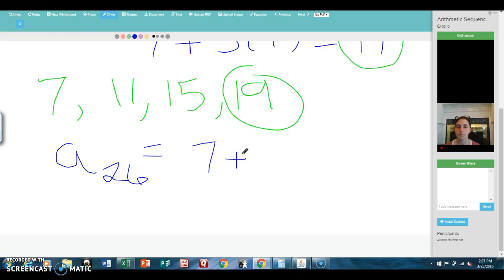So instead we can use our formula: the first term plus N minus 1, so 26 minus 1, and then the common difference, which was 4. So my 26th term is, let's see, 107. So you can imagine that would take a long time if we were writing out all of the numbers.